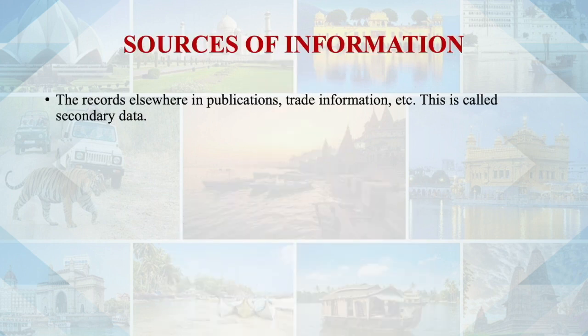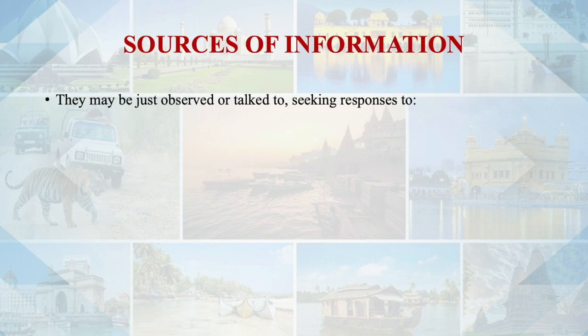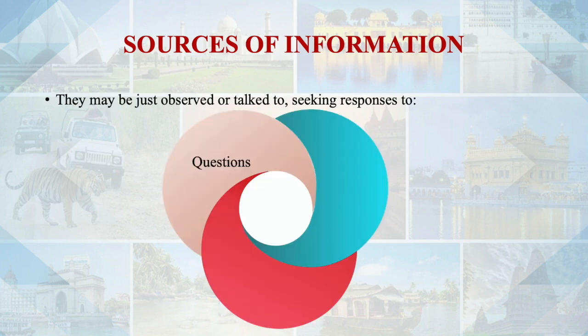In marketing research, we come to know about the sources of information. The information required for decision-making would be available in the records of the organization concerned — this is called marketing information. Records elsewhere, in publications and trade information, is called secondary data. The collection of primary data is feedback — persons will have to be contacted either individually or in groups, and may be observed or talked to, with responses to questions, hypothetical situations, and pictures and images.